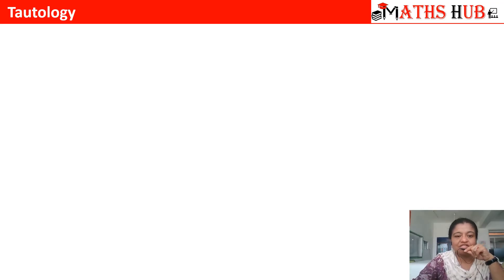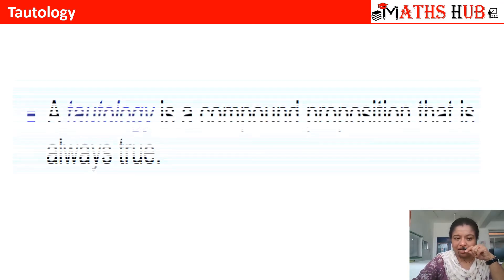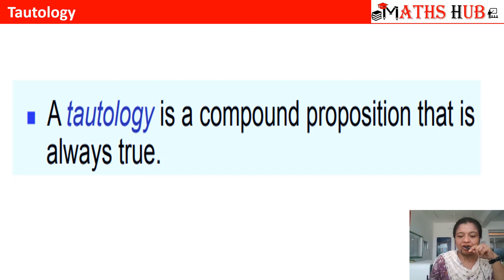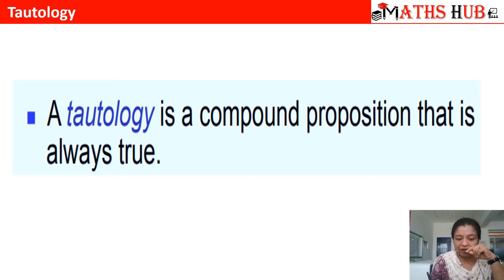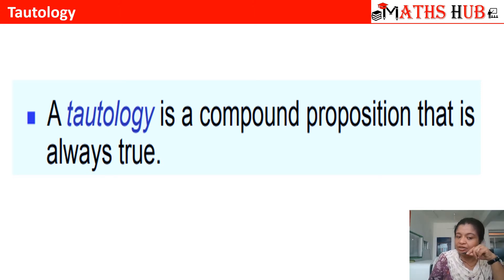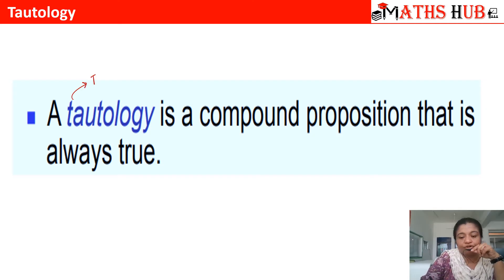The first type is tautology. A tautology is a compound proposition that is always giving you a true value. Irrespective of your input, whenever the compound proposition gives us a true value, that proposition is called a tautology. From the word tautology, 't' stands for true.